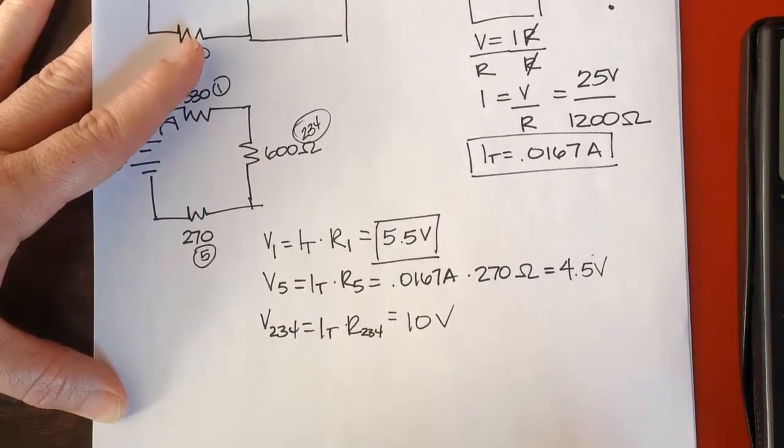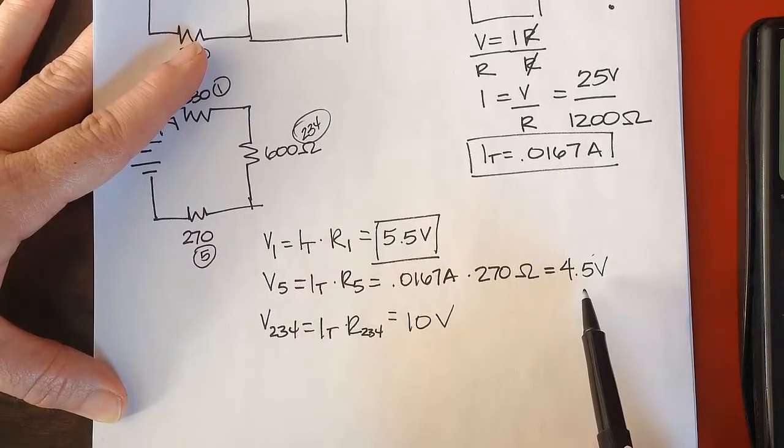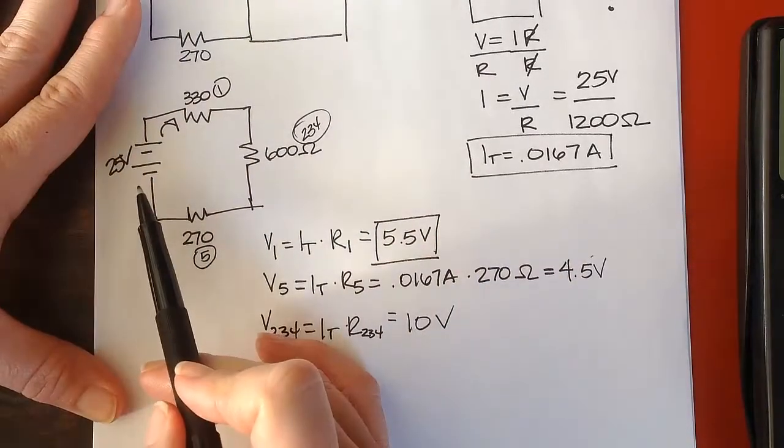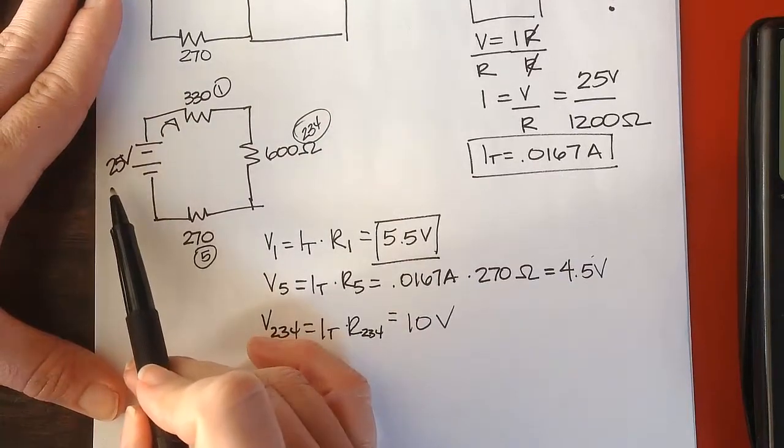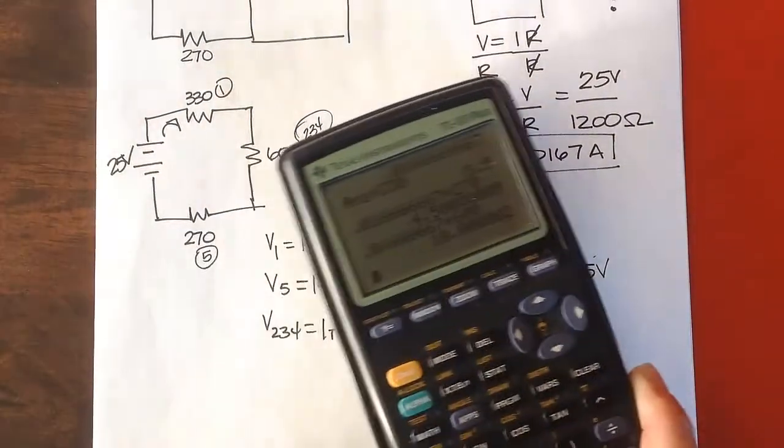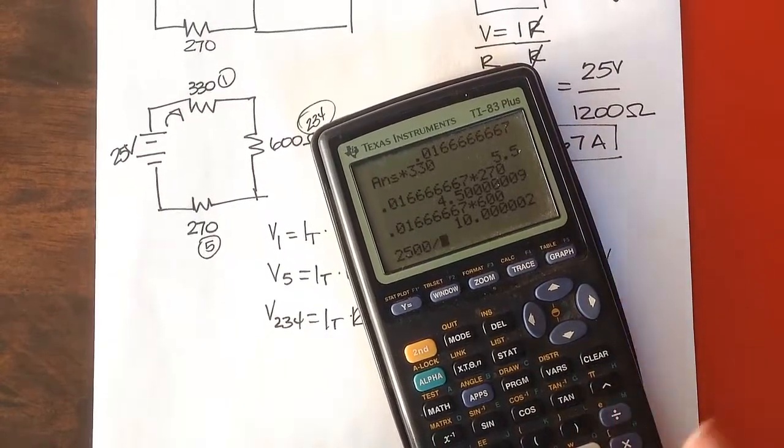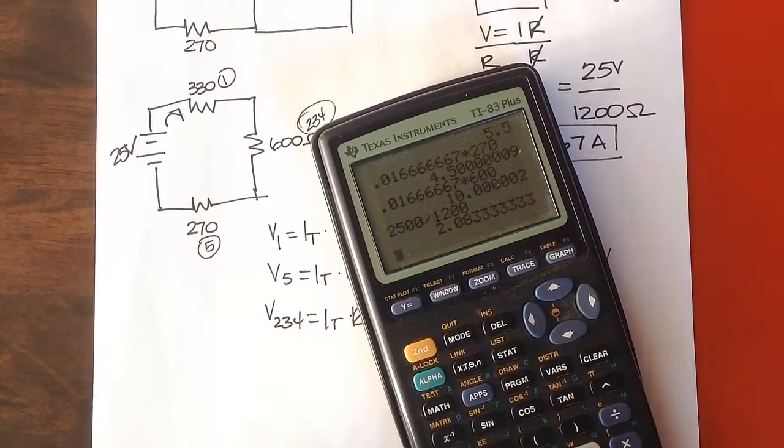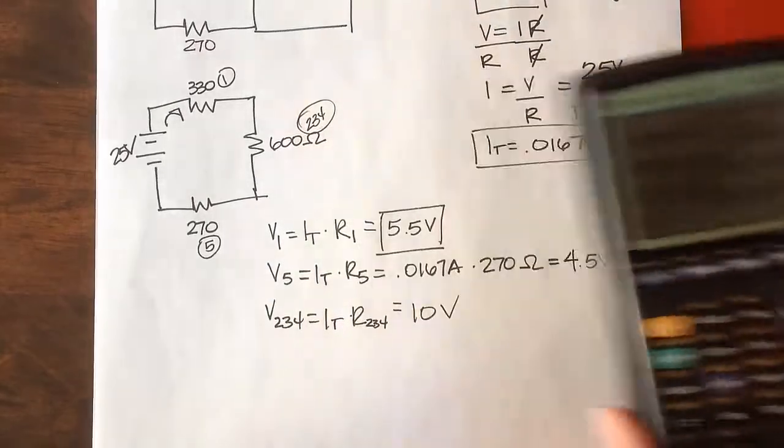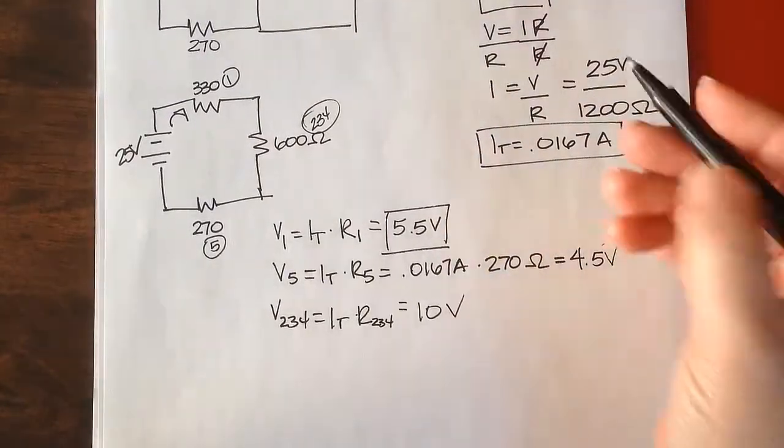So V1 is 5.5, V5 is 4.5, and V234 is 10 volts. If I've done everything correctly earlier, there's something wrong, because our source was 25 volts. So let's go back and just quickly check and be sure that I did that correctly. I didn't. I must have done that wrong. 25 divided by... Yeah, I had this. I must have not punched in 25 volts earlier. I must have done 20 volts, because I got the wrong total current.